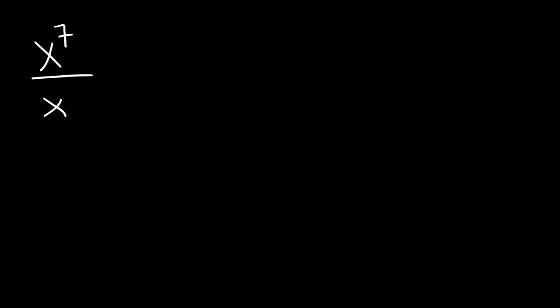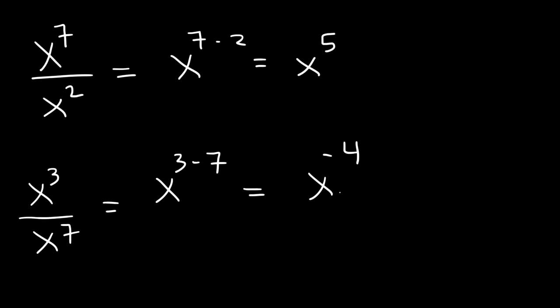Go ahead and work on these two examples. So the first one is going to be 7 minus 2, which is simply positive 5. The next one is going to be 3 minus 7, which is negative 4. Now if you have a negative exponent, you need to move the x variable from the top to the bottom, and then it's going to change sign. So this is equivalent to 1 over x to the 4th.